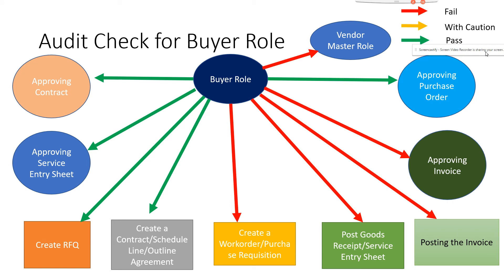A buyer can create a contract and scheduling line item — that is allowed. A buyer can create an RFQ (request for quotation) from a vendor. A buyer can approve a service entry sheet, which is sometimes fine. However, a buyer cannot enter a service entry sheet — that can be green, yellow, or even red depending on the company.